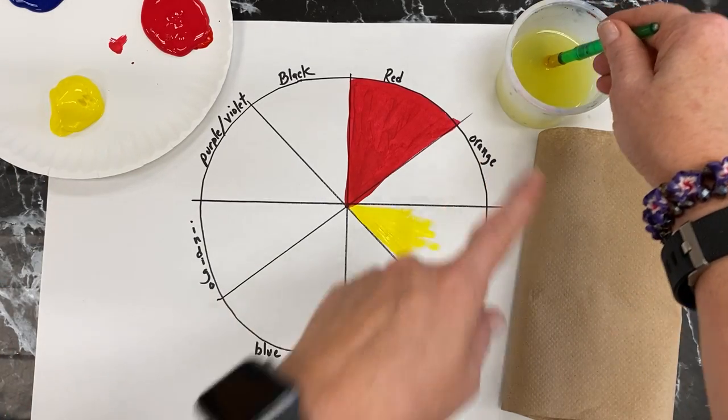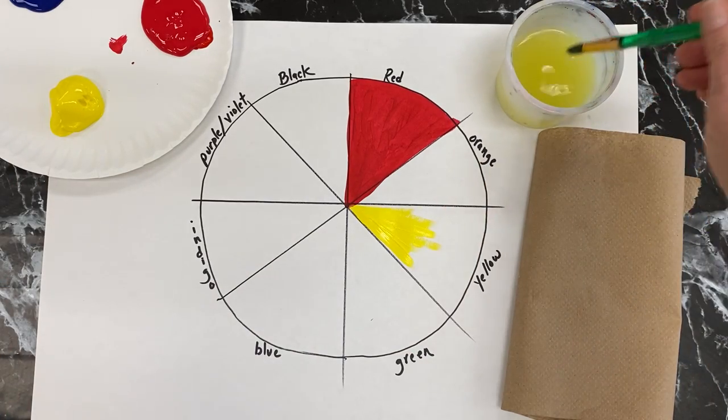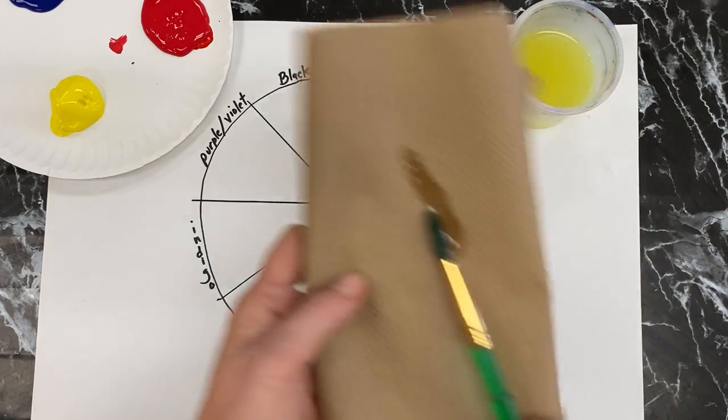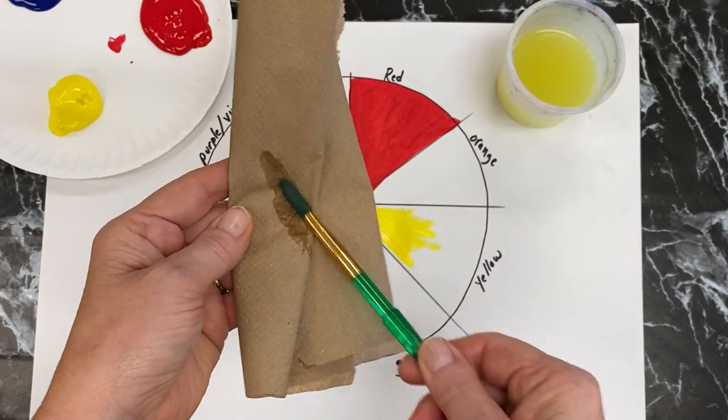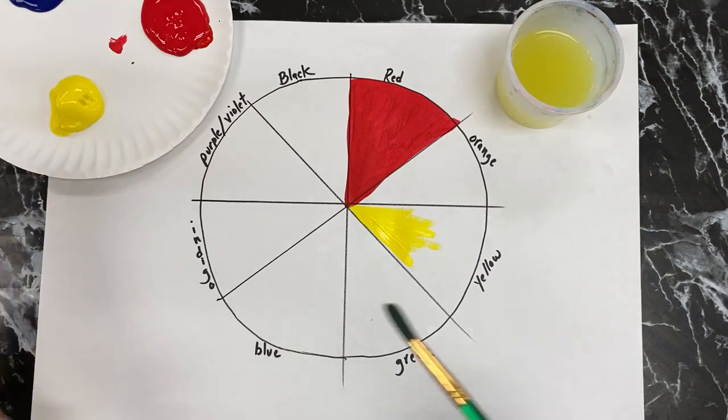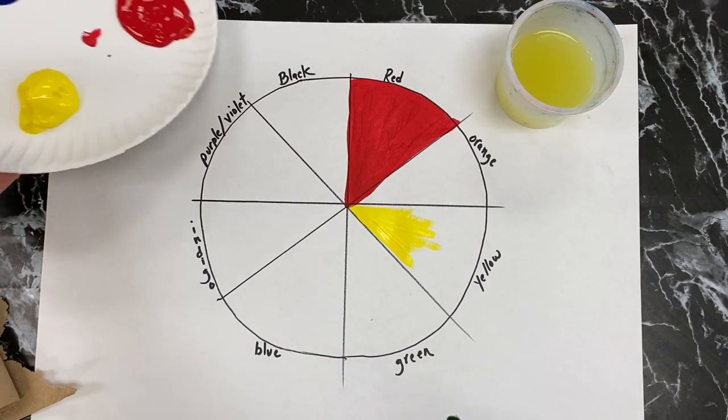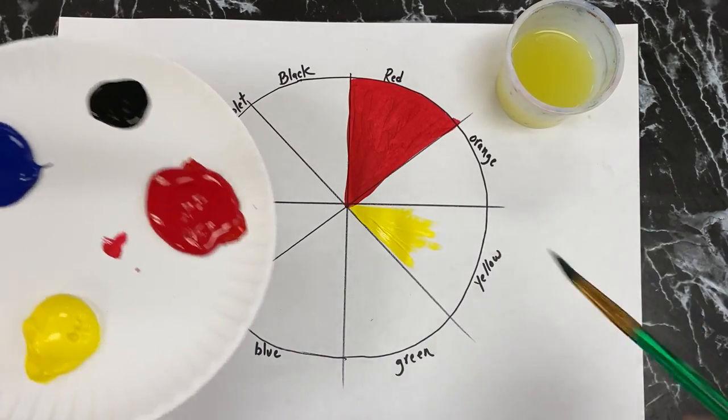You'll need your paint plate, water cup, and a paper towel. Once you have rinsed, you want to gently blot or dry your brush off and go to your next color.